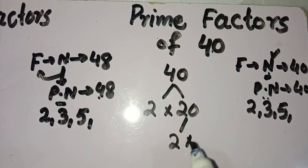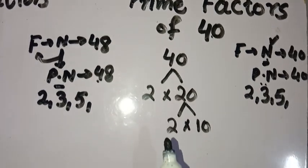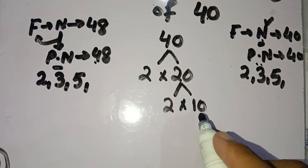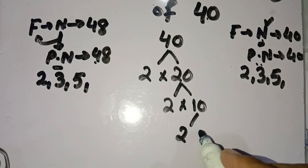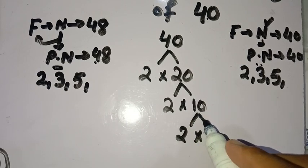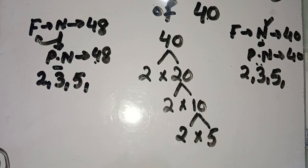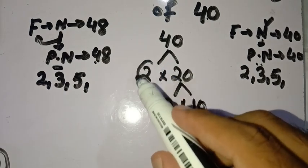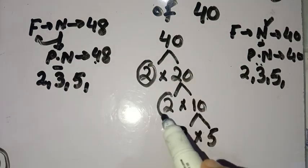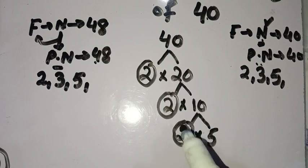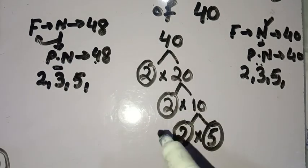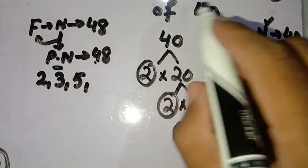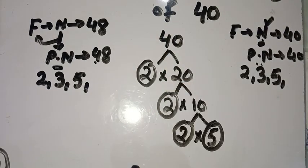Then we divide 10 by the smallest prime number. 2 is the smallest prime number which divides 10, so 2 times 5 equals 10. Both 2 and 5 are prime numbers, so we circle them. The prime factors of 40 are 2 and 5.